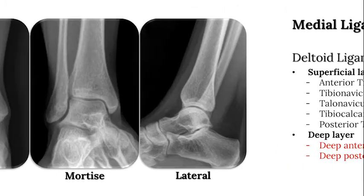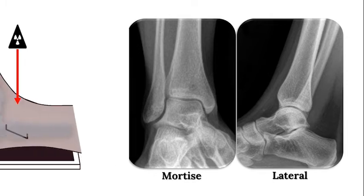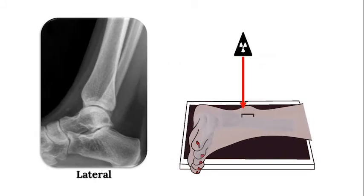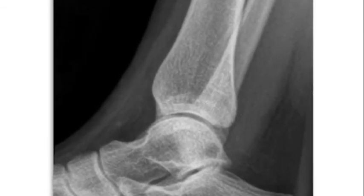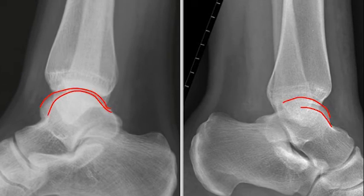Typically for the evaluation of ankle fractures, three views of the ankle are obtained with the patient non-weight bearing, and these include the AP, the mortise, and the lateral x-ray. The AP view is taken with the x-ray beam centered on the anterior aspect of the ankle. The lateral radiograph of the ankle is obtained by centering the x-ray beam on the medial malleolus. A perfect lateral x-ray demonstrates one line representing the talar dome; with malrotation, oftentimes two lines are seen.